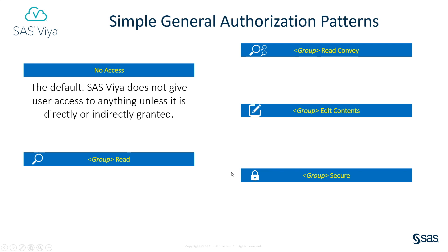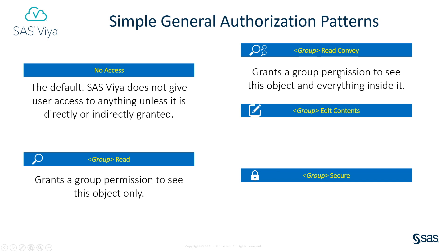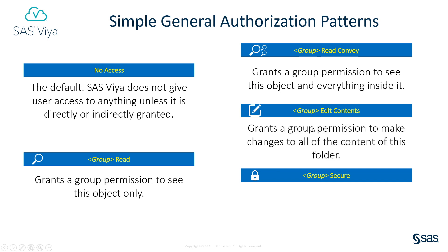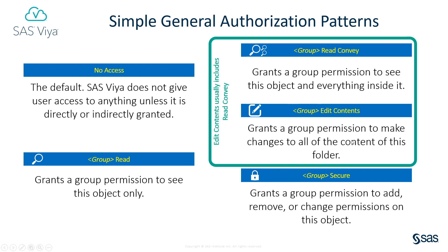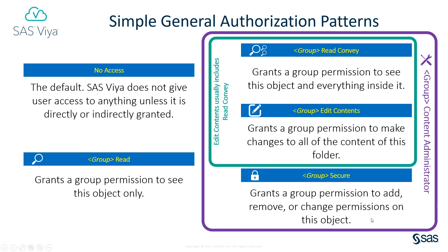SAS Viya does not give the user access to anything unless it is directly or indirectly granted. The group read pattern grants a group permission to see this object only. The group read convey pattern grants a group permission to see this object and everything inside it. The group edit contents pattern grants a group permission to make changes to all of the content of this folder, and the group secure permission grants a group permission to add, remove, or change the permissions on this object. When you grant someone the group edit contents pattern, you would probably also include the read convey pattern for that same group. Similarly, if you grant somebody the secure pattern, it's normal to grant them the read convey and edit contents pattern as well, creating a sort of group content administrator pattern.